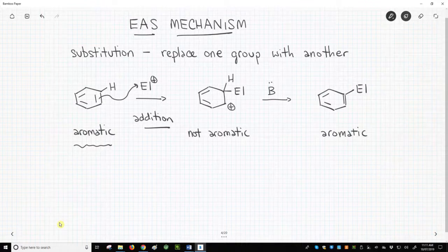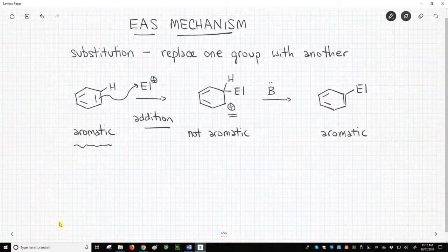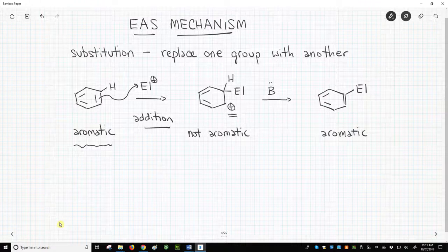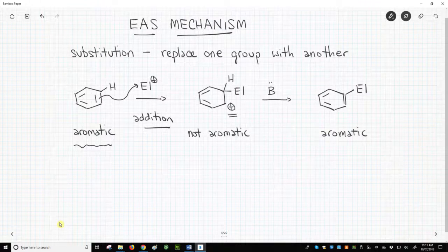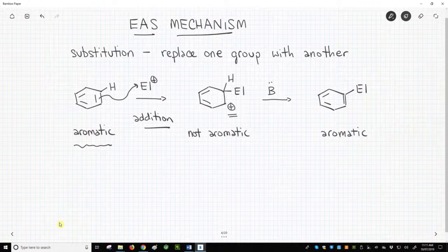The resulting intermediate is a carbocation. We know what happens to carbocations. They either get attacked in an SN1 fashion or lose a beta-hydrogen in an E1 reaction. Normally, we favor the SN1 reaction if possible. In the case of EAS reactions, we favor the E1 because the E1 will form a new pi bond and restore the aromaticity of the product.